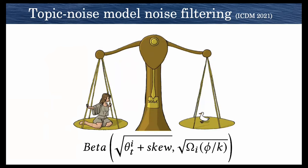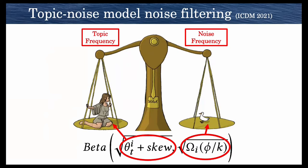The way that it works is kind of like a scale. On one side we put topic frequency, and on the other we put noise frequency, and you can see that they're scaled by some parameters. The beta distribution essentially takes the topic frequency and the noise frequency as its two parameters.